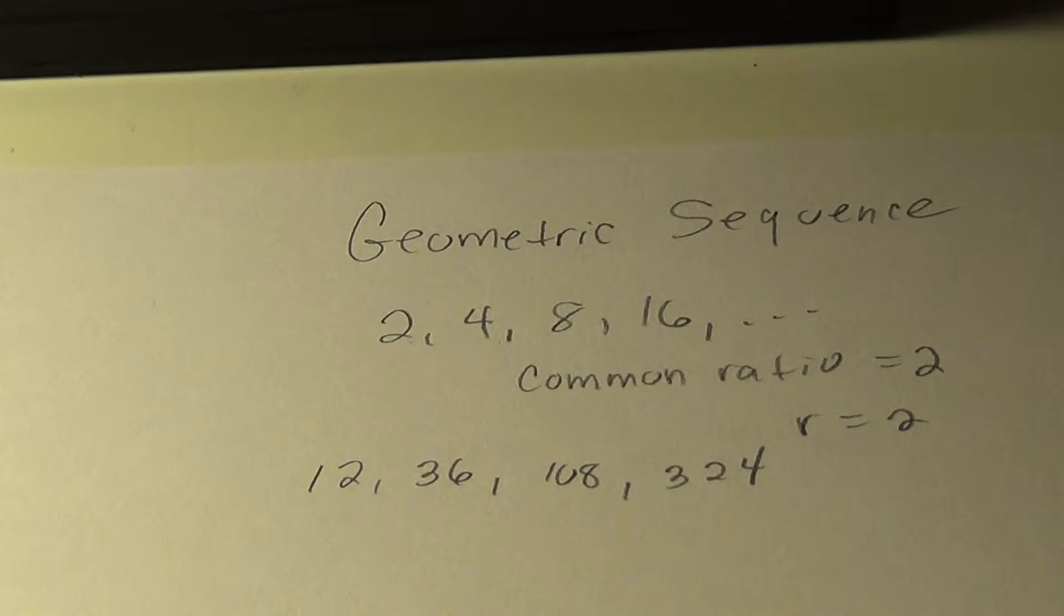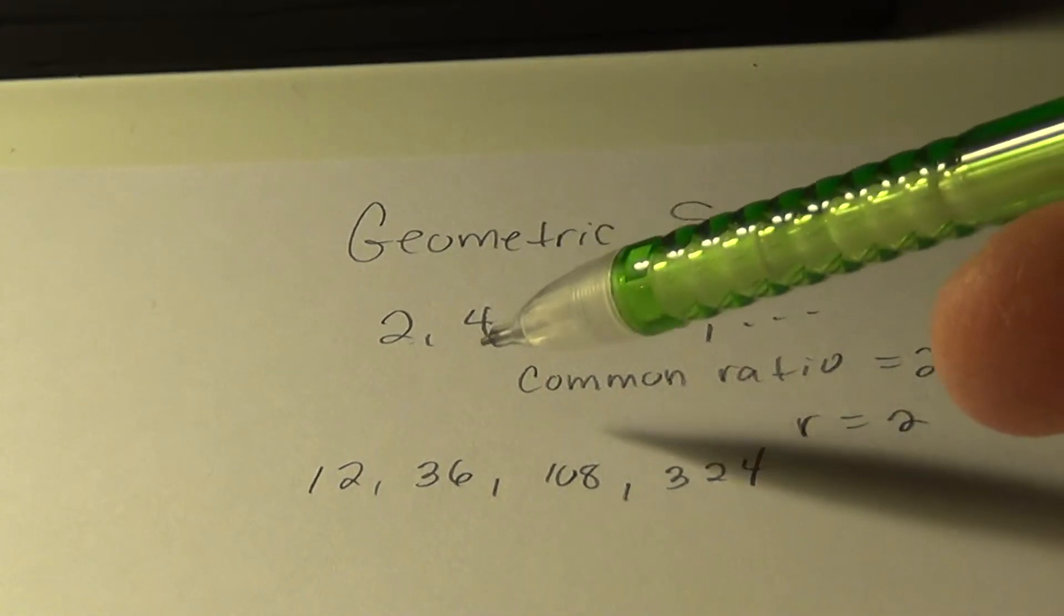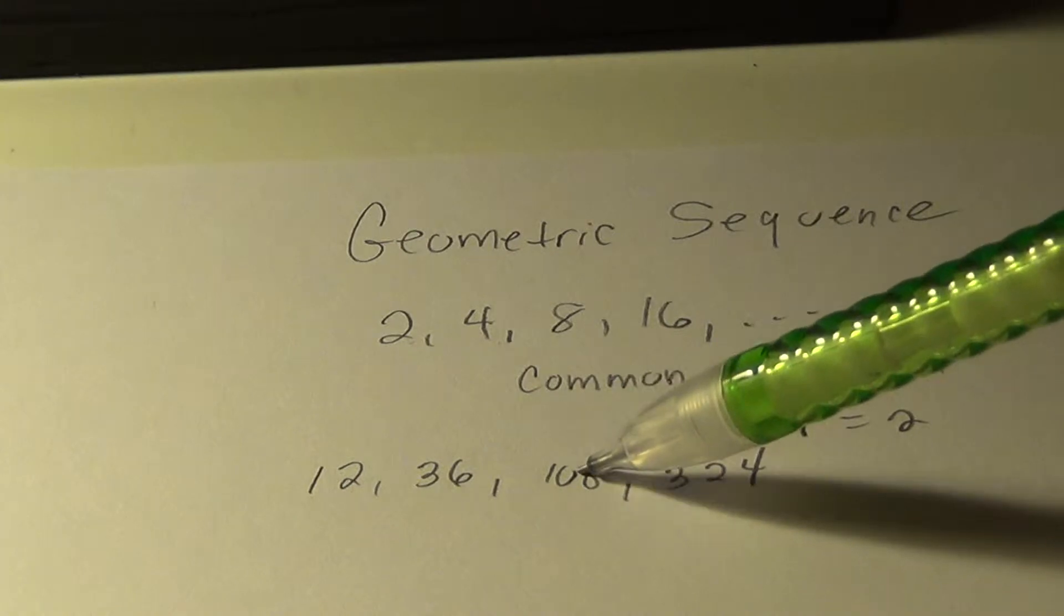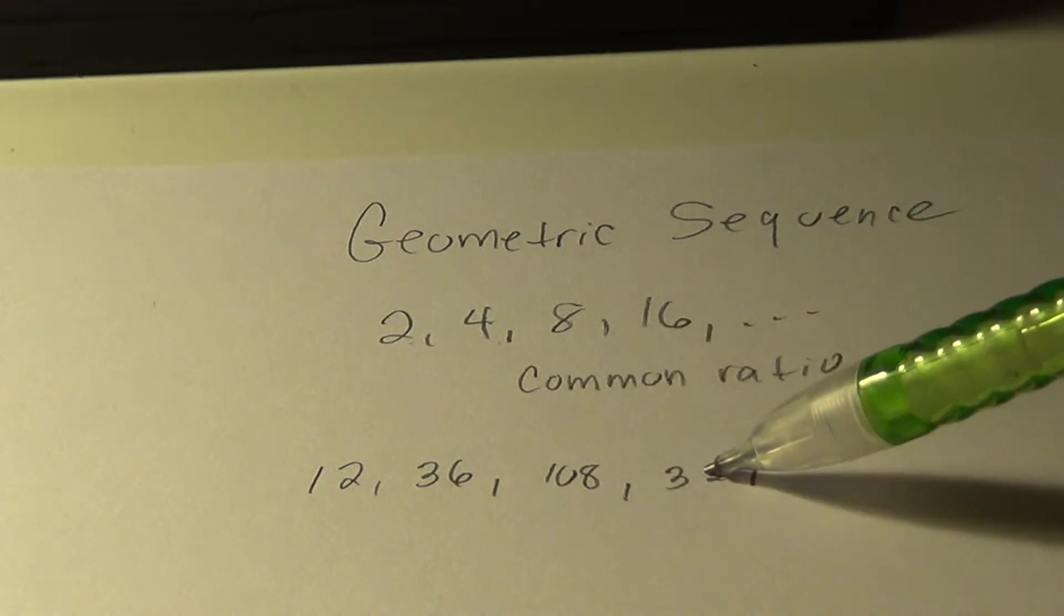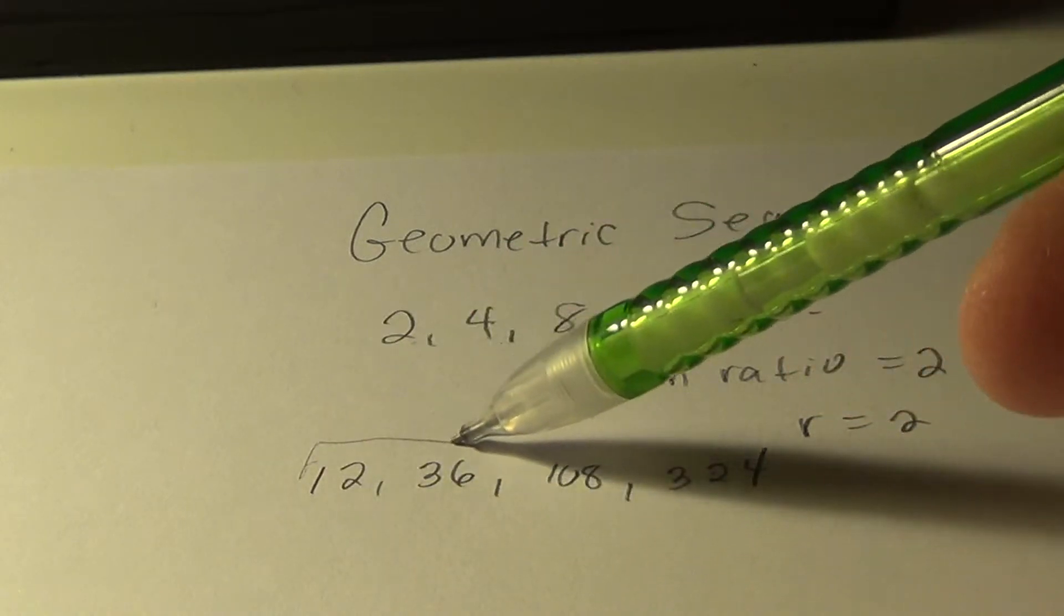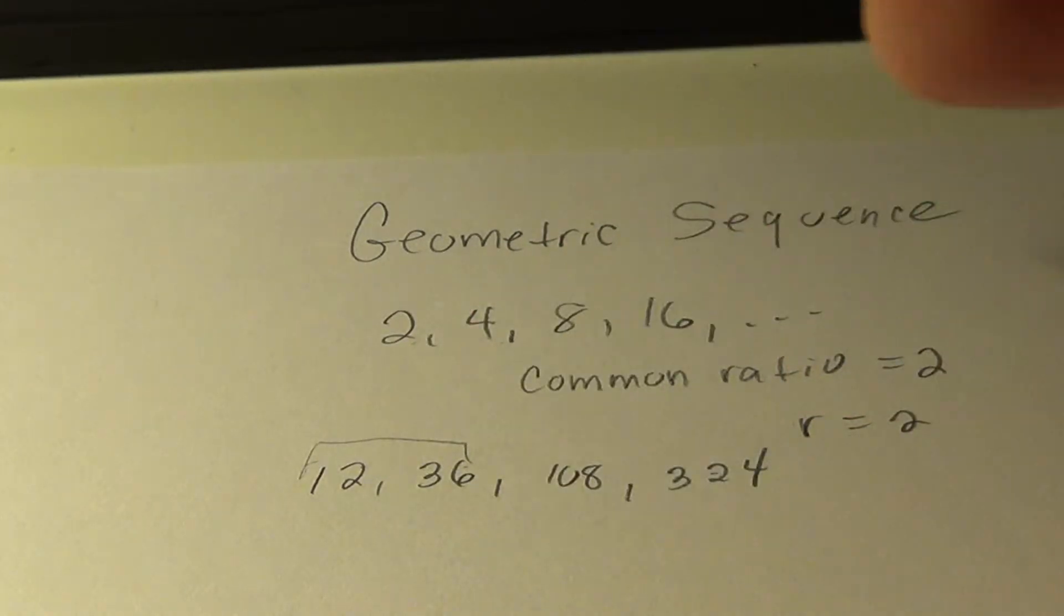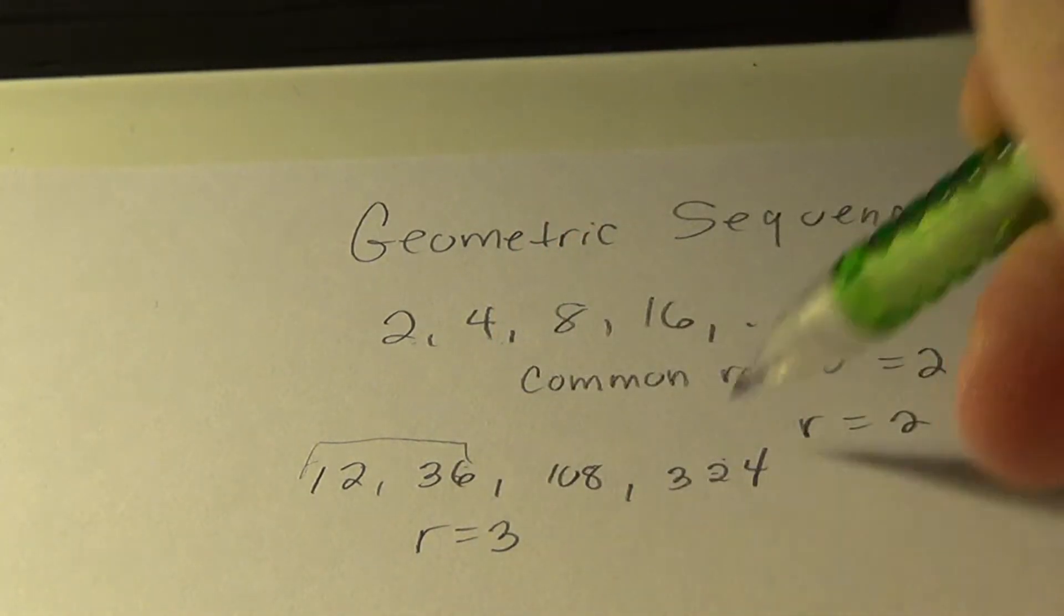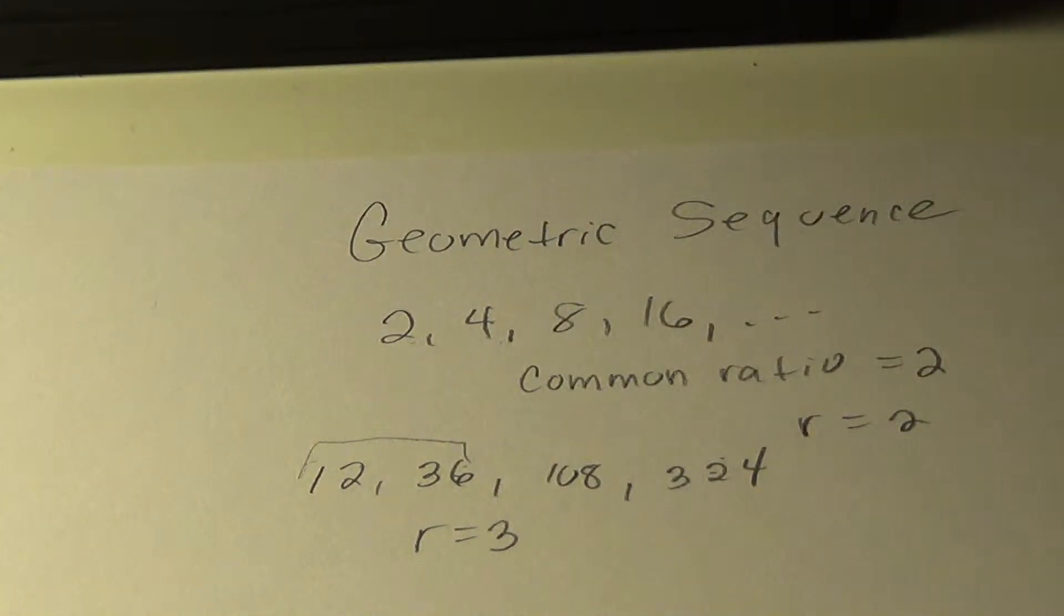What did I multiply each number to get the next? You only have to check if you're sure that it's geometric, and this is. All you have to do is pick any pair and find out what number did I multiply this by to get this. The simpler case is usually the first two. So what did I multiply 12 by to get 36? The common ratio is 3, and you'll see that that holds true as I go down the sequence.